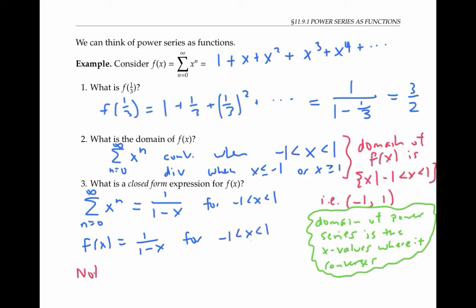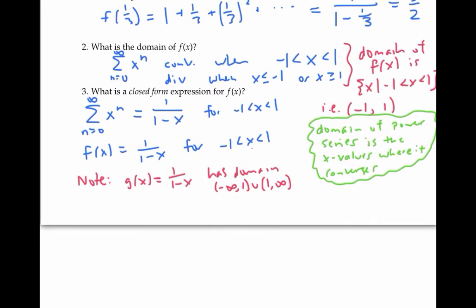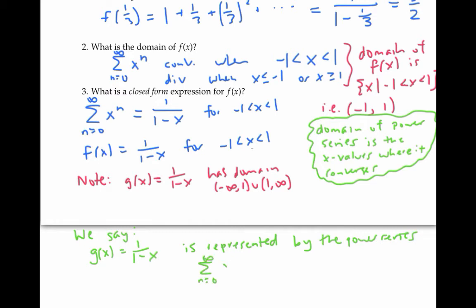Notice that if I just looked at the function g of x equals one over one minus x out of context, it would have domain spanning from negative infinity to one together with one to infinity, because g of x is defined for all x values not equal to one. So f of x and g of x are not exactly the same function — they have different domains — but they are exactly equal on the interval from negative one to one. We say that g of x is represented by the power series, the sum from n equals zero to infinity of x to the n, for x between negative one and one.